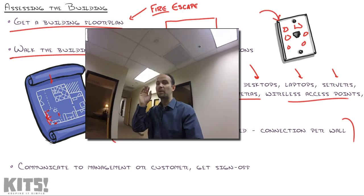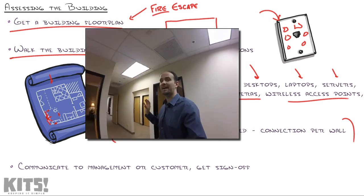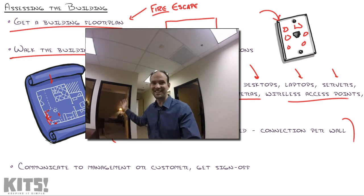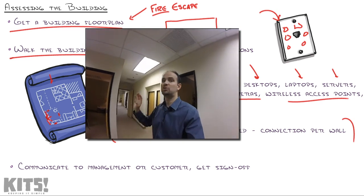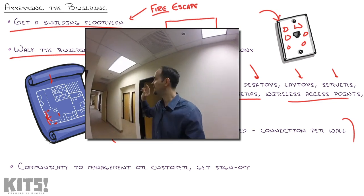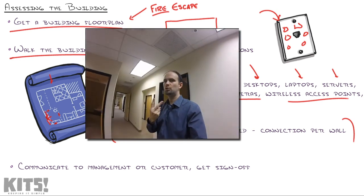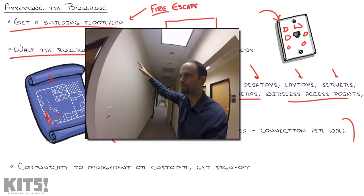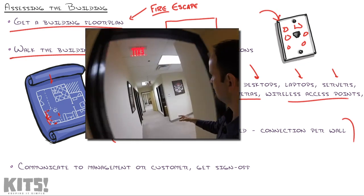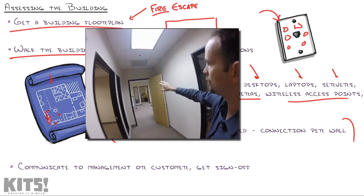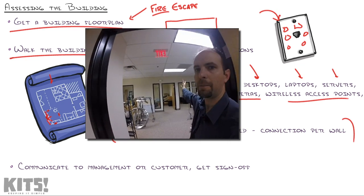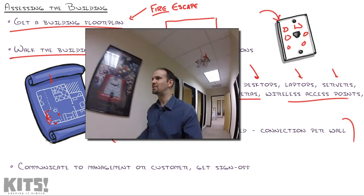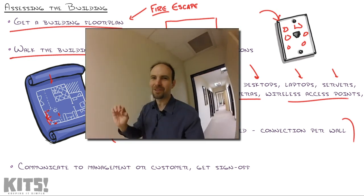We're back at the front of the building, and there's one more seed I want to plant while we're at this assessment phase, and that is wireless. Wireless will be a completely different topic and series to get into in depth, but just as a precursor while thinking about cabling: a building of this size would probably need two wireless access points. I'd stick one right here in this hallway to cover the front portion of the building, and then one probably right here to cover the back half — so we've got two wireless zones with a good overlap and signal coverage.